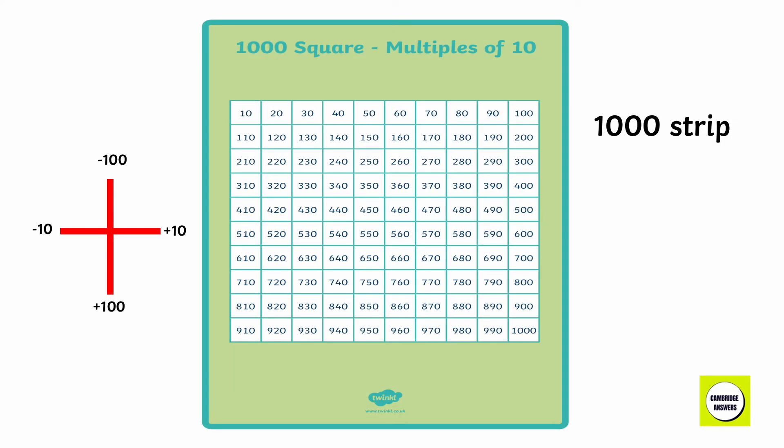A thousandth square for the multiples of 10, which is also known as a thousandth strip, has numbers that start from 10 and end at 1,000. When we want to move up, we subtract 100. When we want to move down, we add 100. When we want to go forward, we add 10. And when we want to move back, we subtract 10.